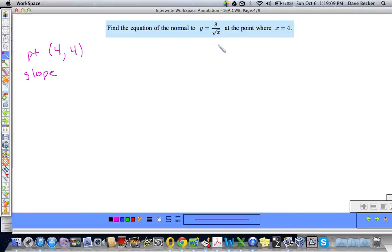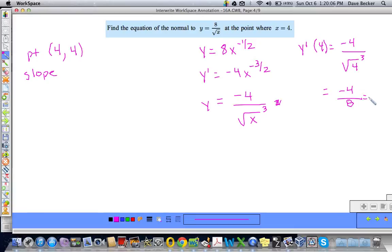How do we find slope? We take the derivative. I'm going to rewrite this to make it easier to take the derivative as 8x^(-1/2). Then the derivative of y would be -4x^(-3/2). Rewriting that so I can evaluate it easier would be -4 over the square root of x³. And I'll just put it outside since it's a nice number 4 that I'm taking the square root of. y'(4) is going to be equal to -4 over the square root of 4³. That would be -4. Square root of 4 is 2, 2³ is 8, and that will be -1/2.